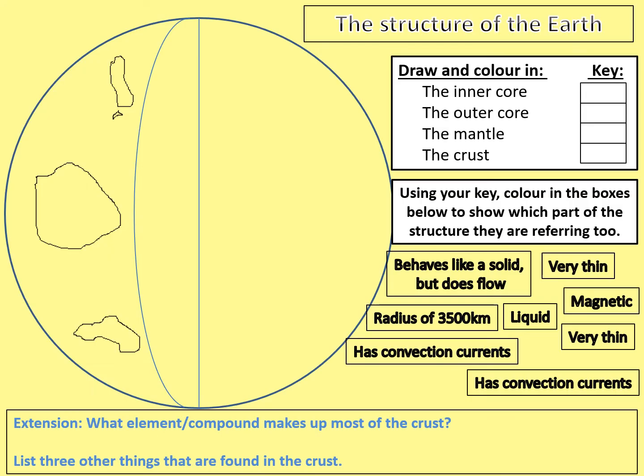What I want you to do now is print off the sheet attached to show my homework on the structure of the Earth. I'd like you to colour and label it, and add some of the annotations from this slide. Your sheet will look exactly like this. Within the circle of the Earth structure, make and colour the layers in accordingly using your key. Add the labels in the boxes to your image. There's also an extension task you could attempt.